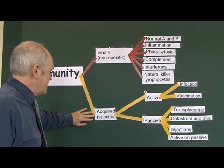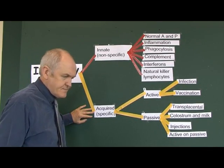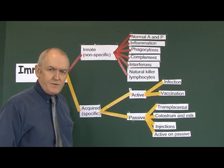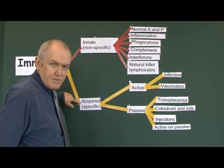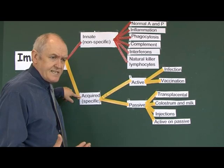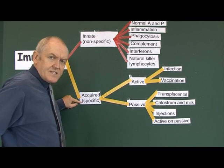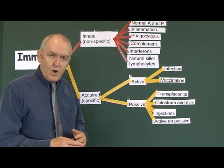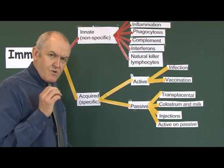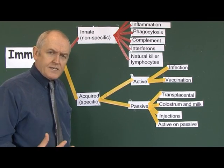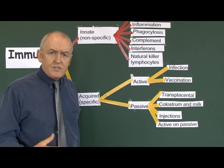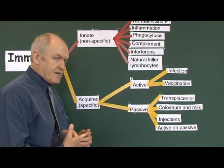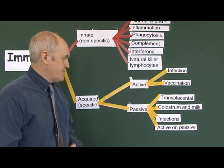Acquired, or specific, immunity is different. If you acquire something, at one time you did not have it and then you get it. So acquired immunity means at one time you were not immune to a particular organism, but then you acquire immunity to it. And this is specific — it only acts against one particular type of organism. Whereas innate immunity is non-specific, acting against a wide spectrum of organisms, acquired immunity acts against only one particular organism, and we must first be exposed to that organism in order to develop immunity to it.